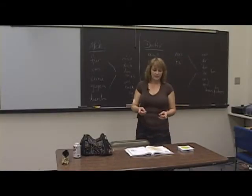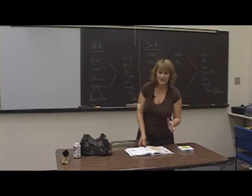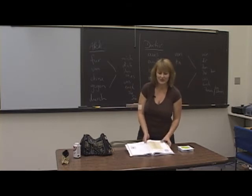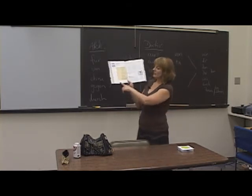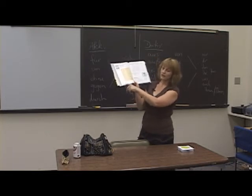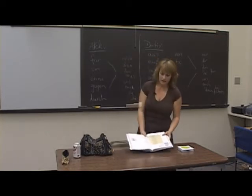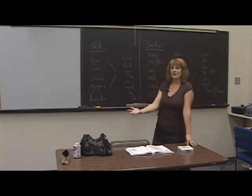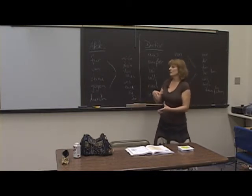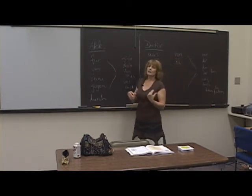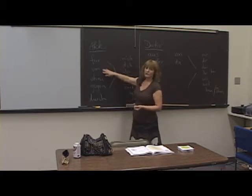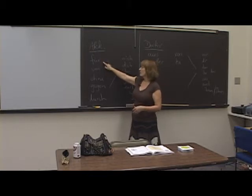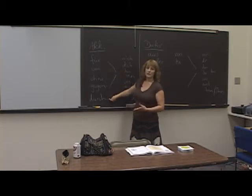Welcome to Dative Part 2, the sequel. We're going to be on page 248 today. If you remember what we said last time, the accusative is the direct object of a sentence, but it also follows certain prepositions. When we studied the accusative, we also studied certain prepositions followed by the accusative: für, um, ohne, gegen, and durch.